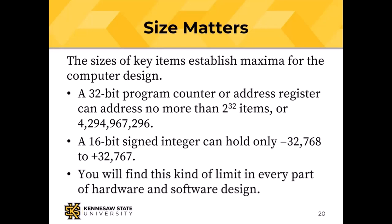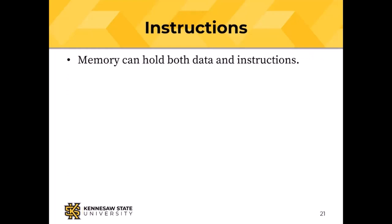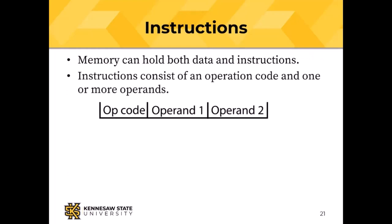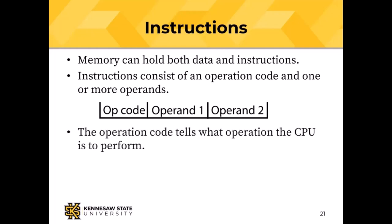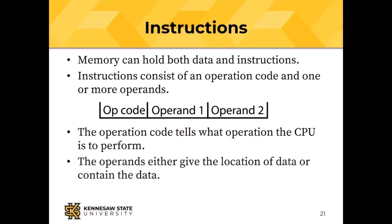Memory can hold both data and instructions. The instruction consists of an operation code and one or more operands. The operation code is just a binary number, and the design of the computer assigns meaning to each of those numbers. The operands either give the location of the data or contain the data itself. The opcode tells the CPU what to do; the operands describe the data to be used.